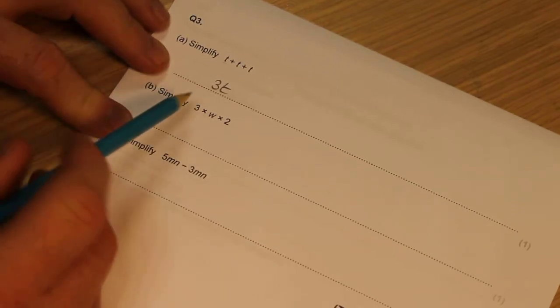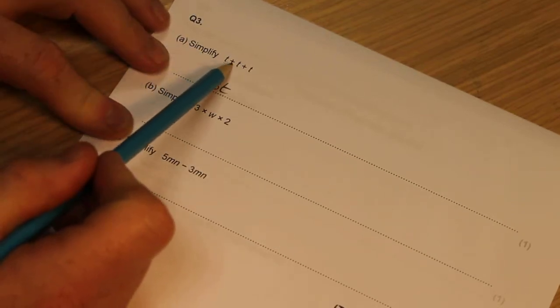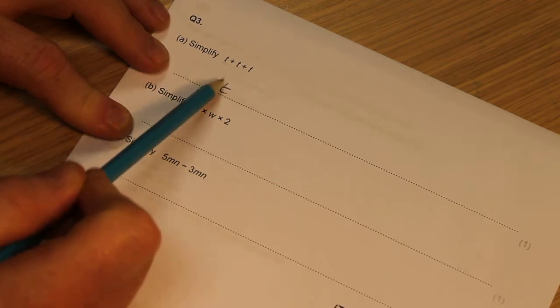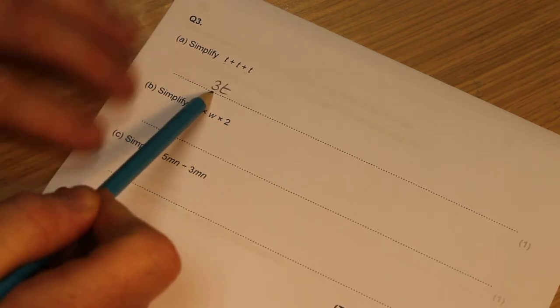Okay, this is question 3. It says simplify t plus t plus t. So we've seen this type of question before, so we should be able to add those t's together and get us 3t.